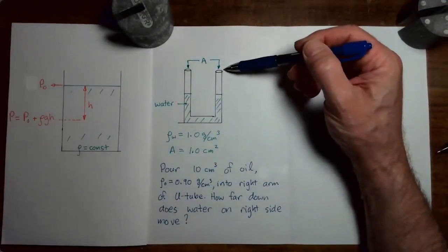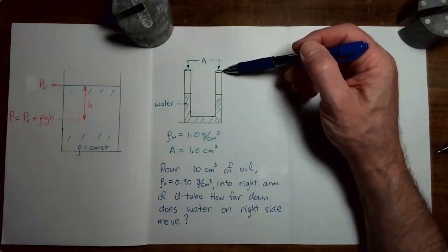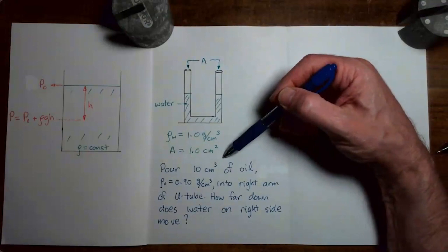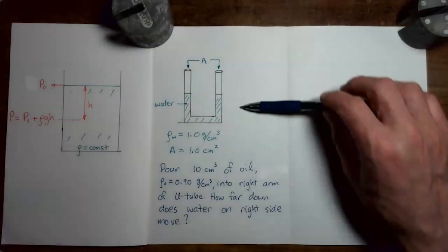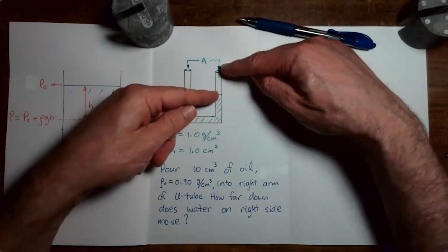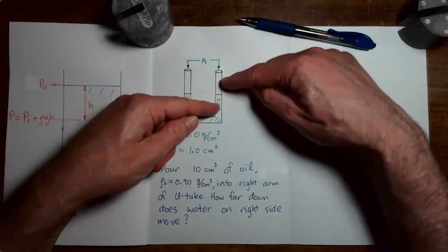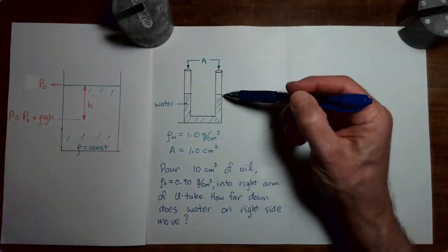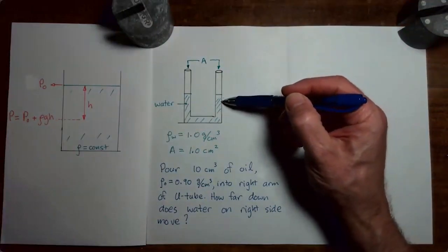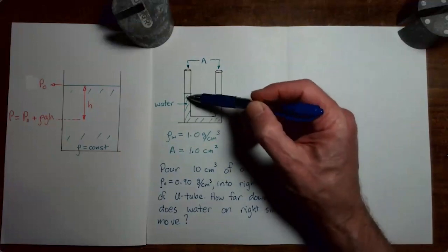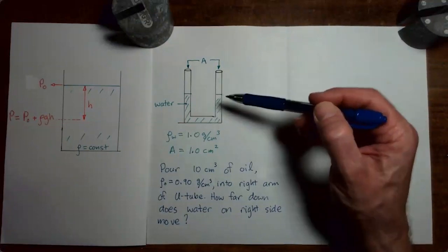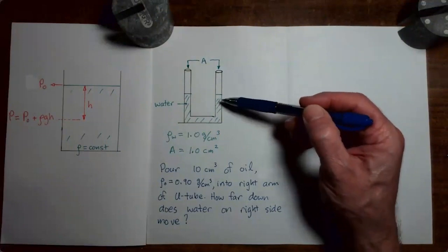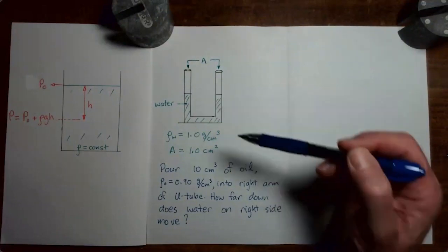Now what we're going to do is go to the right arm of the U-shaped tube and pour in 10 cubic centimeters of oil. The density of that oil is 0.9 grams per cubic centimeter. When we pour in that oil, it gives us an oil column which pushes down on the water on the right side, so some water moves to the left side. The water level on the right goes down, and the water level on the left goes up.